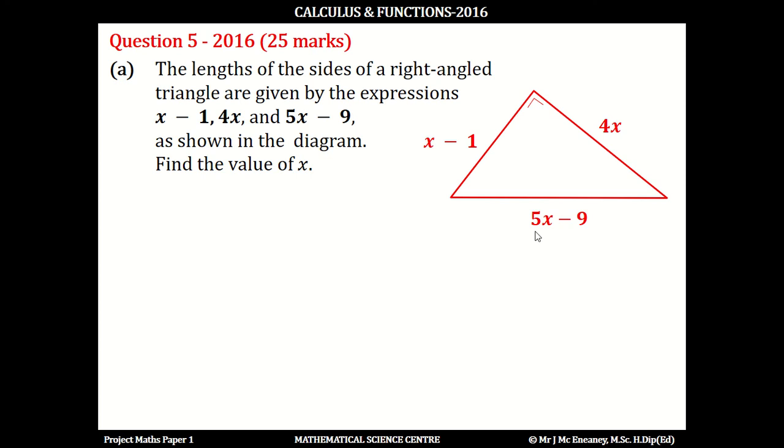In this right-angled triangle, the 5x minus 9 is the hypotenuse because it's opposite the right angle. So using the Pythagorean theorem, 5x minus 9 squared is going to equal x minus 1 squared plus 4x squared.